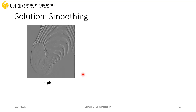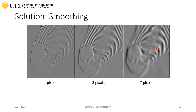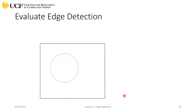Looking at real examples: with smoothing of one pixel (no smoothing), then three pixels, then seven pixels — increasing the smoothing filter size gets rid of noise but also smooths out the edges themselves. So there should be a nice balance: too much blurring and your edges become indistinct. You need to be careful about how much you smooth the image so that you are still able to detect edges clearly.